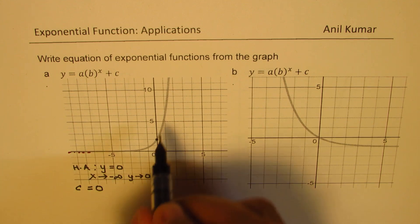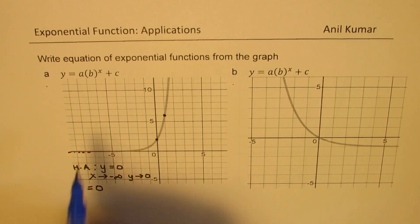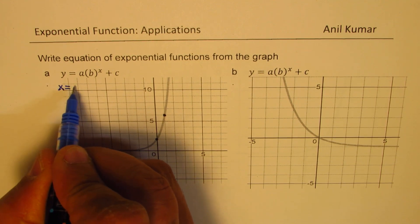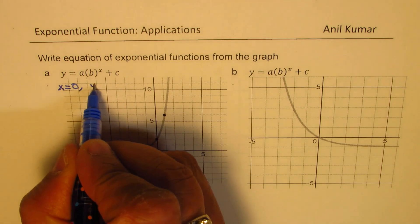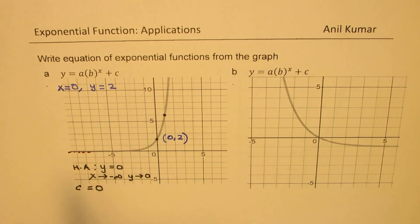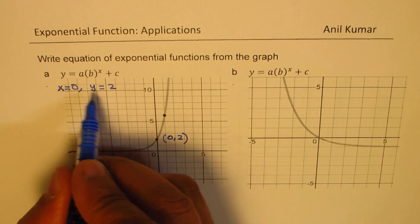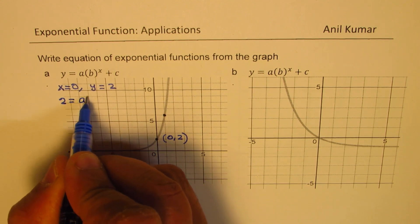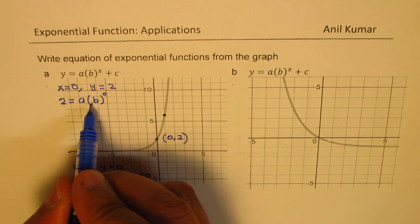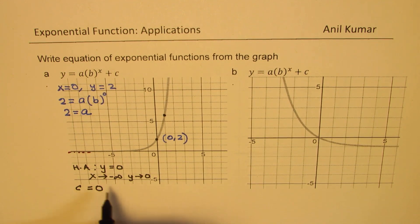To find a and b we take the points at x equals 0 and x equals 1 — these are the two critical points. Substituting x equals 0 and y equals 2 (since this point is (0, 2)) into the equation, with c already known to be 0, we get 2 equals a times b to the power of 0. Since anything to the power of 0 is 1, we get a equals 2.